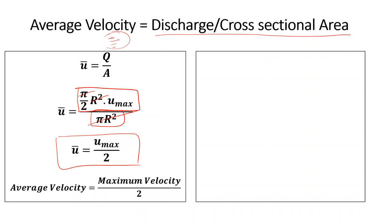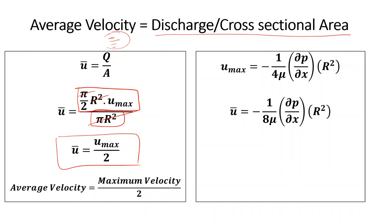Substituting the expression for u_max, we can write the average velocity as: ū = (1/8μ) * (∂P/∂x) * R². Earlier we left ∂P/∂x unevaluated because there were too many differential terms. Now, having eliminated the other differential terms, we can rearrange as: dP = (8μ * ū / R²) * dx, which is now integrable.